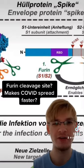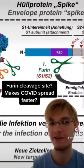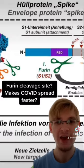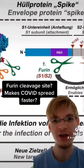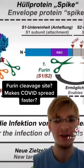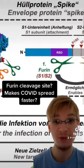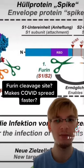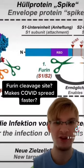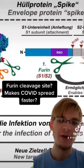The S1/S2 consists of a polybasic motif, meaning it has a motif of amino acids that are basic. Those amino acids are arginine, arginine, an aliphatic amino acid, and then another arginine, which the furin protease will be able to recognize and cleave, thereby exposing the S2-prime fusion peptide priming site underneath it.